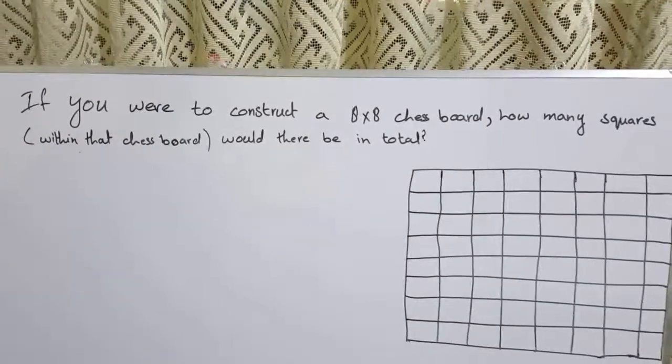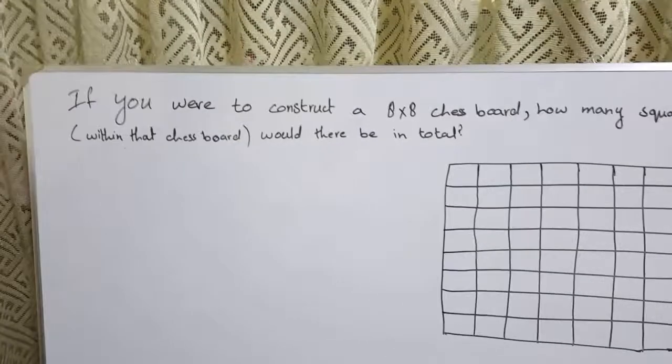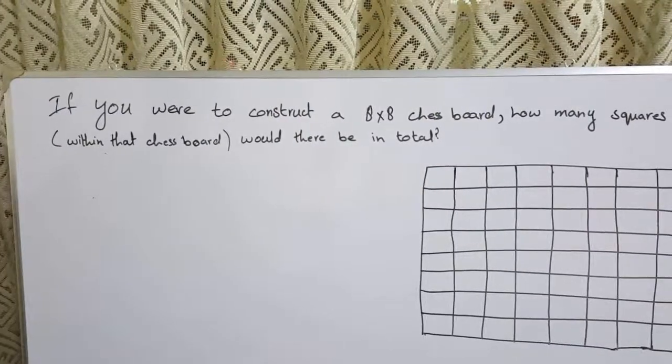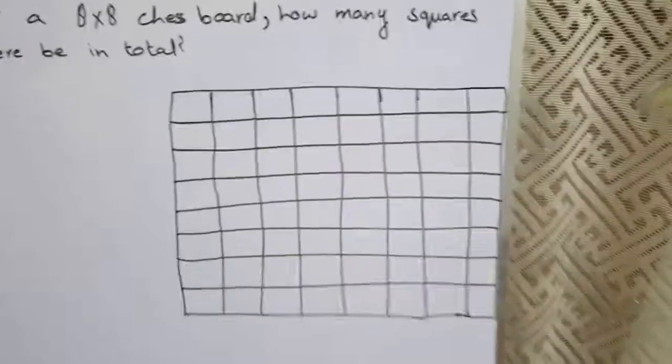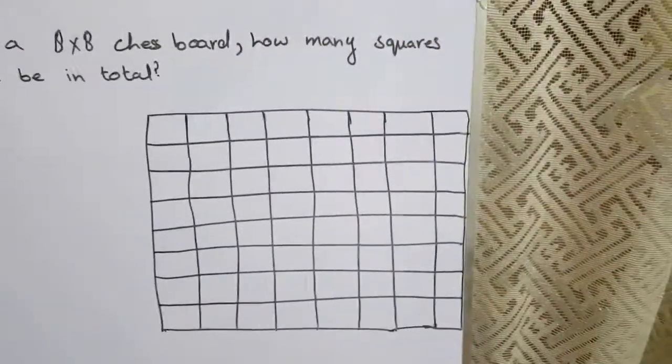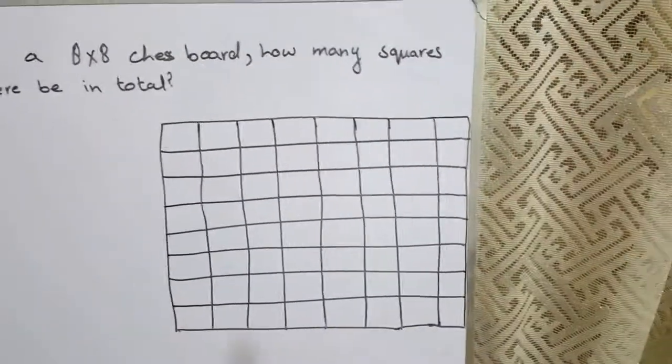So the question is, if you were to construct an 8x8 chessboard, how many squares within that chessboard would there be in total? So on the right, you guys can see that we have this 8x8 chessboard, which means that there's 8 columns and 8 rows.